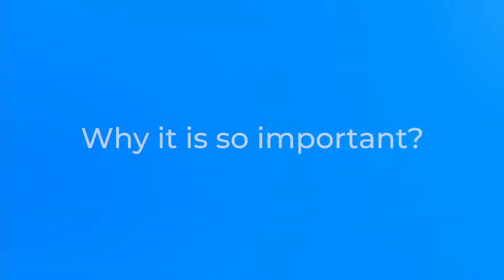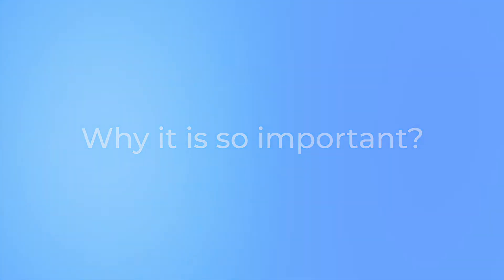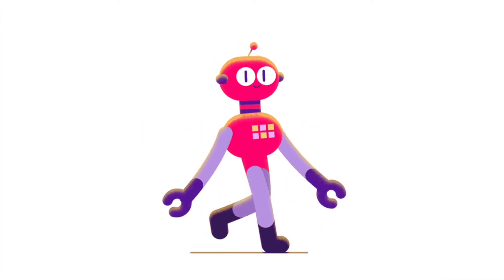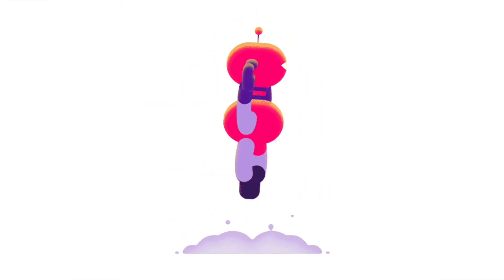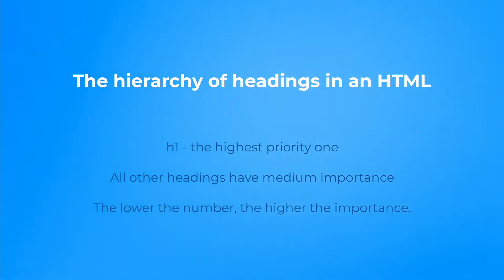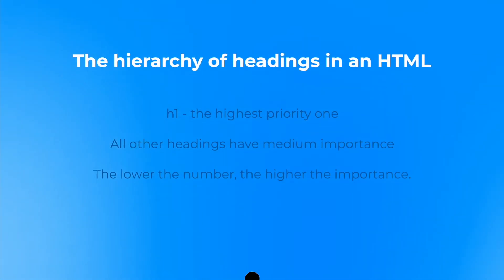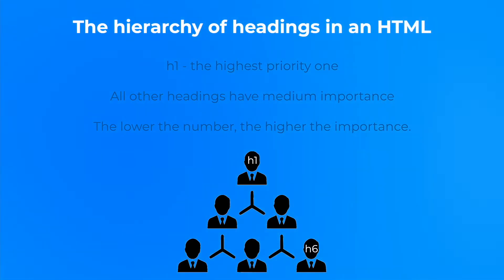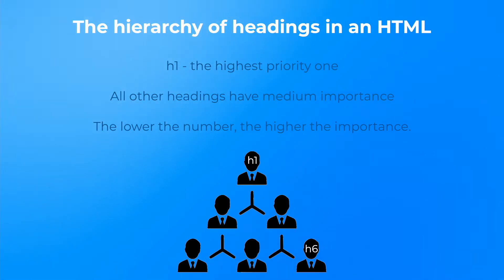So now, let's check why it's so important not to have H1 duplicates. Google reviews the H1 header as part of the ranking algorithm and to determine what keywords a page is targeting. Having duplicate H1 headers across multiple pages sends a mixed signal to Google. The hierarchy of headings in an HTML document is clear. H6 is the lowest level heading, H1 is the highest priority one, while all the other headings have a medium importance. The lower the number, the higher the importance.